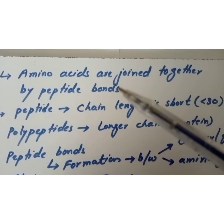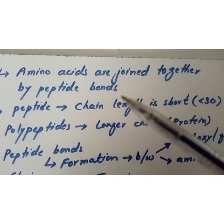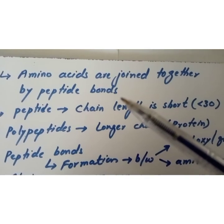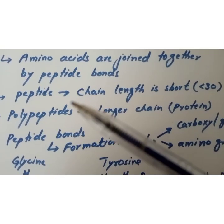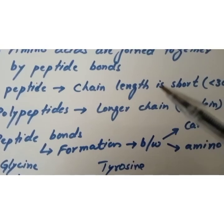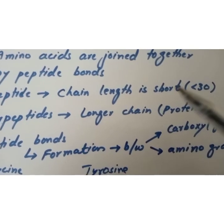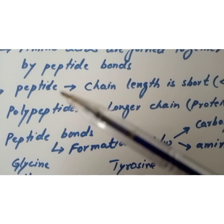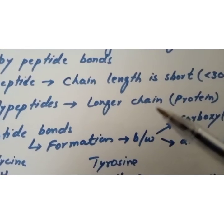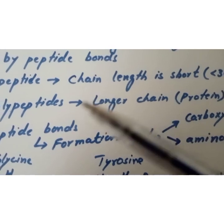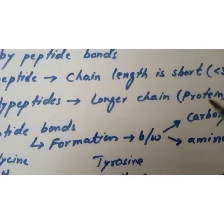The second basic feature of proteins is the presence of peptide bonds. Amino acids are joined together by peptide bonds. If the chain length is short — fewer than 30 amino acids — these are called peptides. If the chain is longer, these are called polypeptides or proteins.